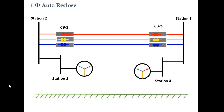Transient faults are those which persist in transmission lines for a very short duration of time — maybe one second or even less than that — and are removed automatically from the transmission line. For example, transient faults include touching of a tree branch from outside the line corridor to the line and getting removed automatically, or faults due to insulator flashover or lightning.